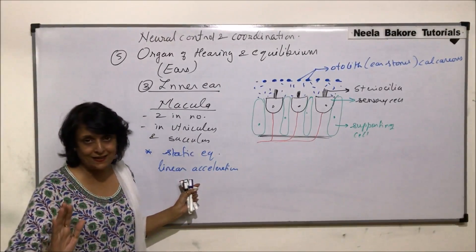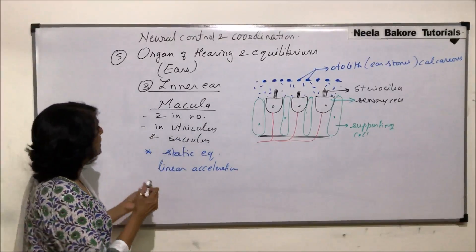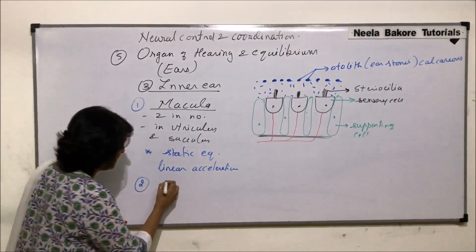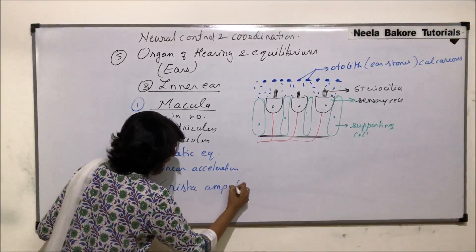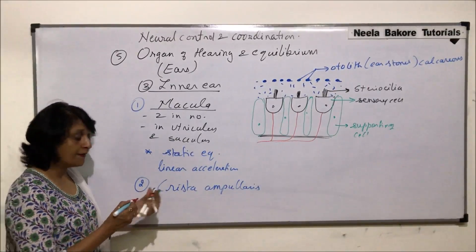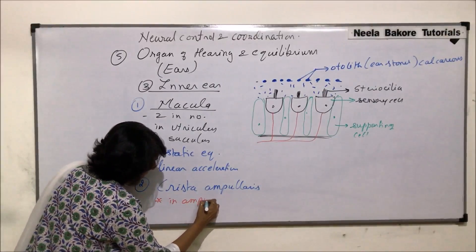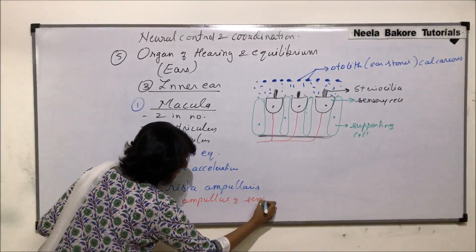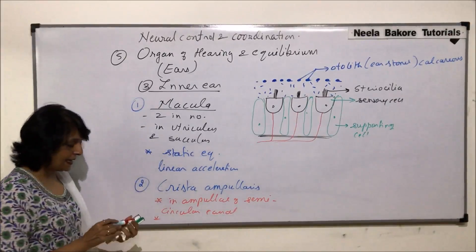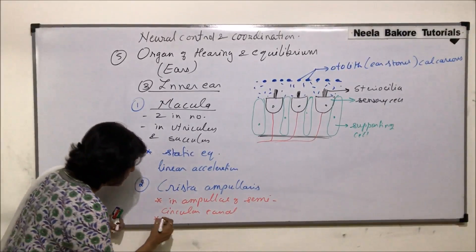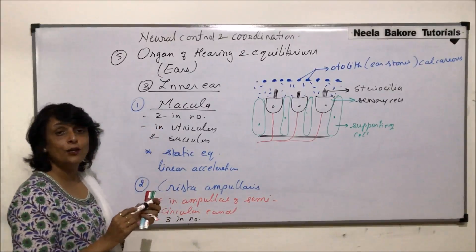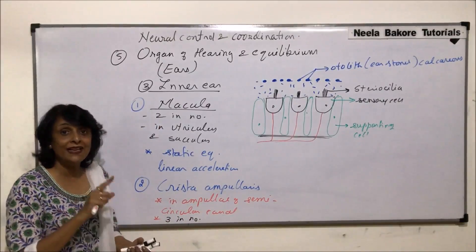The second structure is known as crista, or crista ampularis. This name is given because they are found in the ampulla of the semicircular canals. As we know, in each ear there are three semicircular canals, so there are three crista. The maculae are two in number and crista are three in number in each ear.